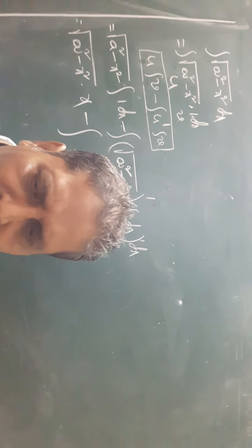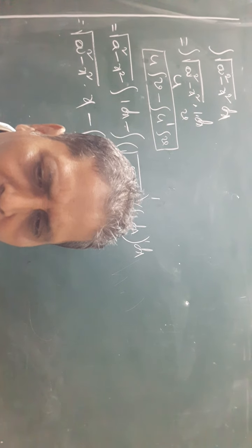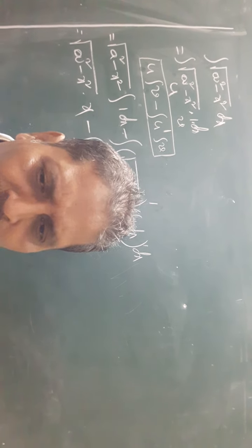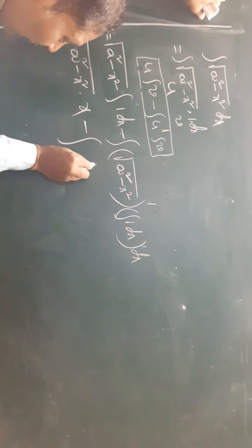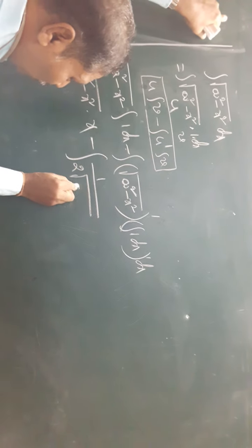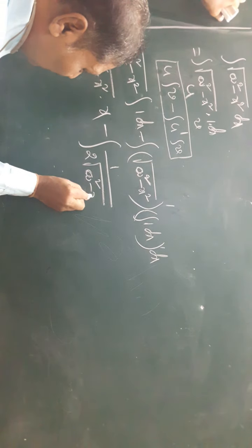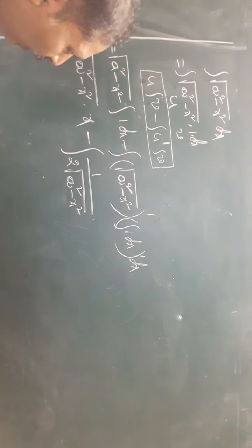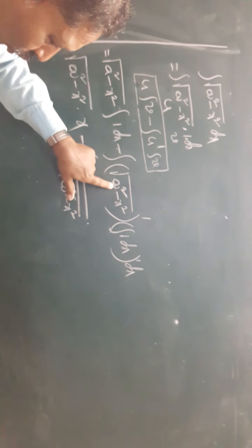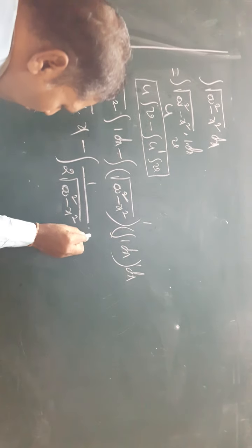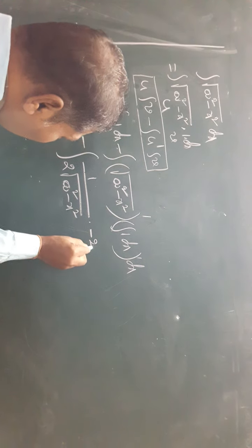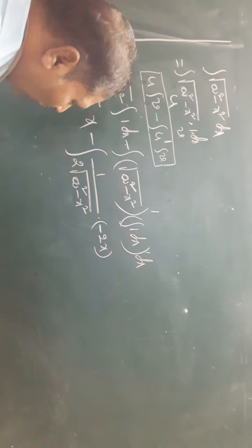First, derivative of the root function: 1 by 2√x. Derivative of a² is 0; derivative of x² is 2x. So u' = (1 / 2√(a² - x²)) · (0 - 2x), which simplifies with the 2 cancelling.